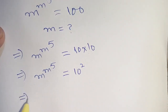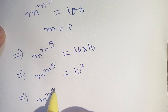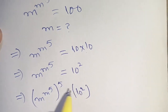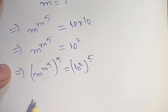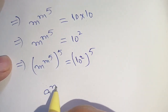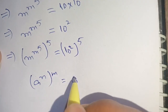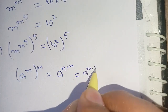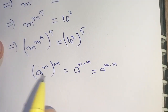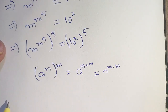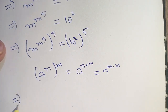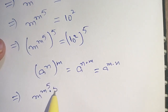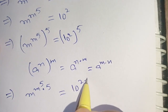In the next step we can write this equation as m raised to the power m raised to the power 5, bracket power 5, is equal to 10 raised to the power 2, bracket power 5. We know that a raised to the power n, bracket power m, is equal to a raised to the power n times m. On applying this identity on the left hand side as well as on the right hand side, we have m raised to the power m raised to the power 5 times 5 is equal to 10 raised to the power 2 times 5.